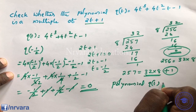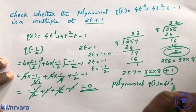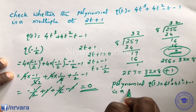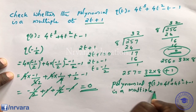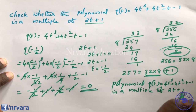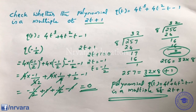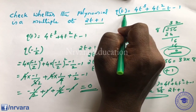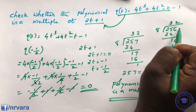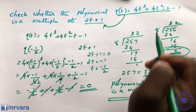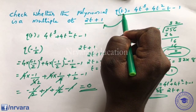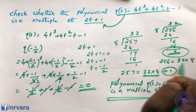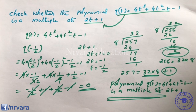The polynomial q(t) = 4t³ + 4t² - t - 1 is a multiple of (2t + 1). Since the remainder is 0, (2t + 1) is a factor of q(t). This confirms the factor theorem condition.